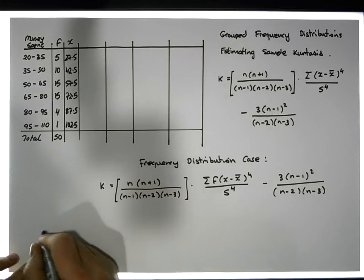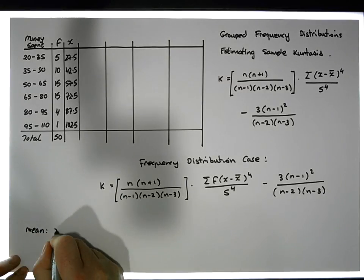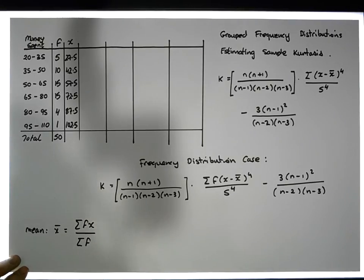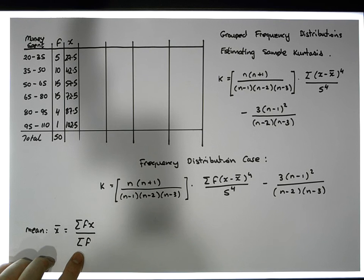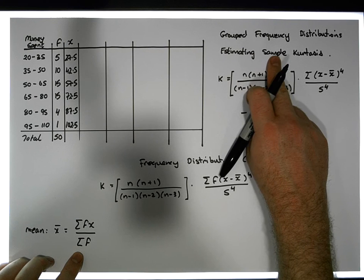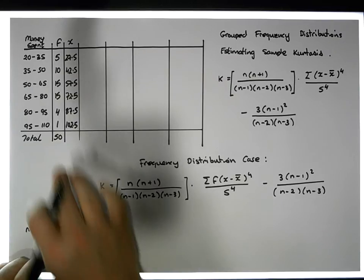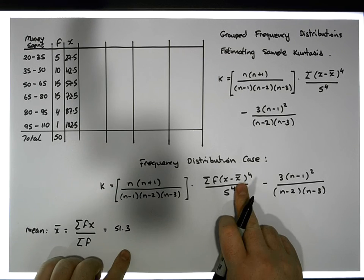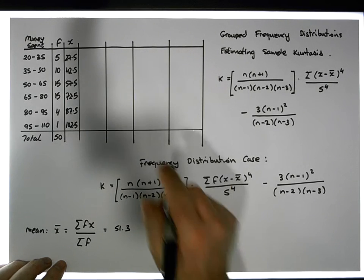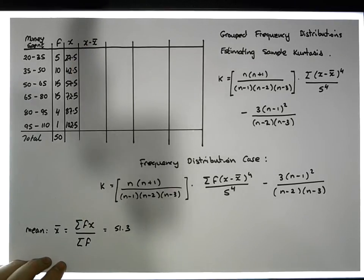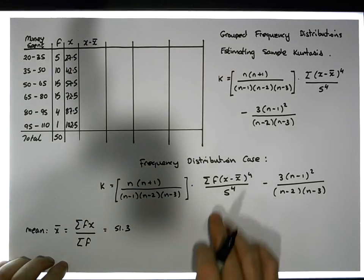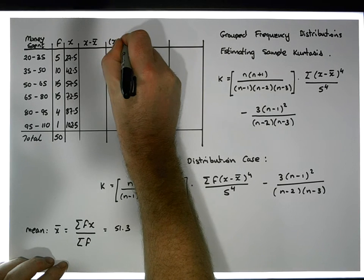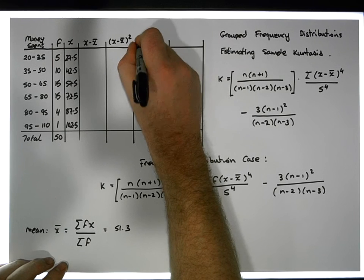The mean x-bar equals the sum of the frequencies times the observations divided by the sum of the frequencies. I've already calculated this — when we computed sample skewness for this distribution — and the mean works out to approximately 51.3. Now that I know the mean, I'm going to calculate x minus x-bar for each class, and then square those values to get x minus x-bar squared.